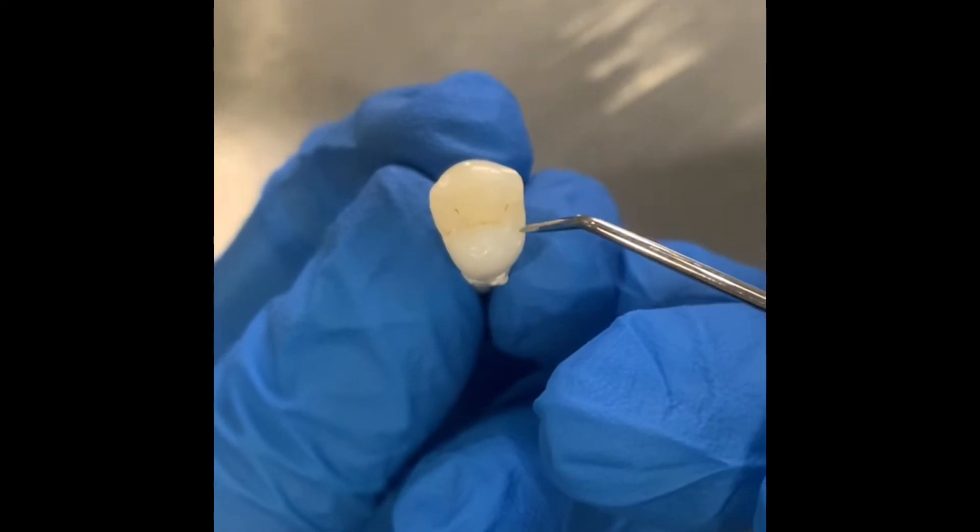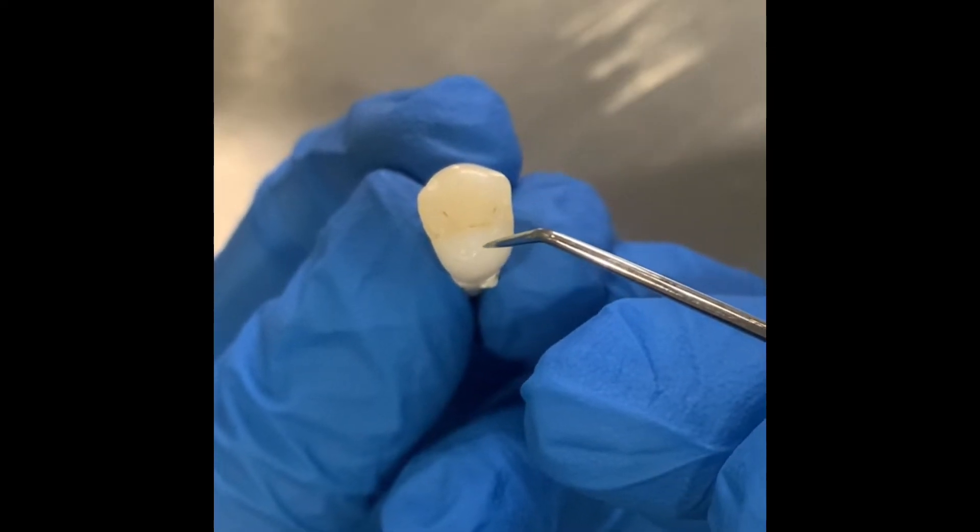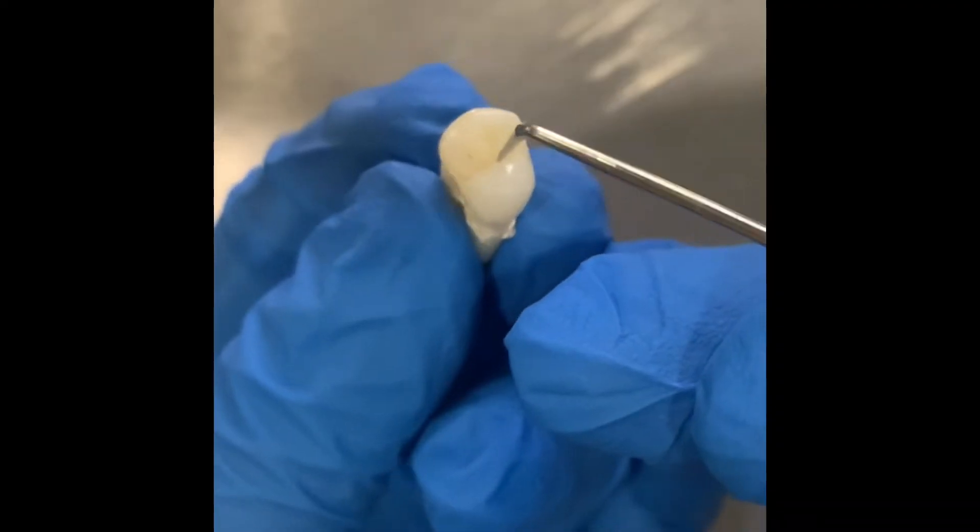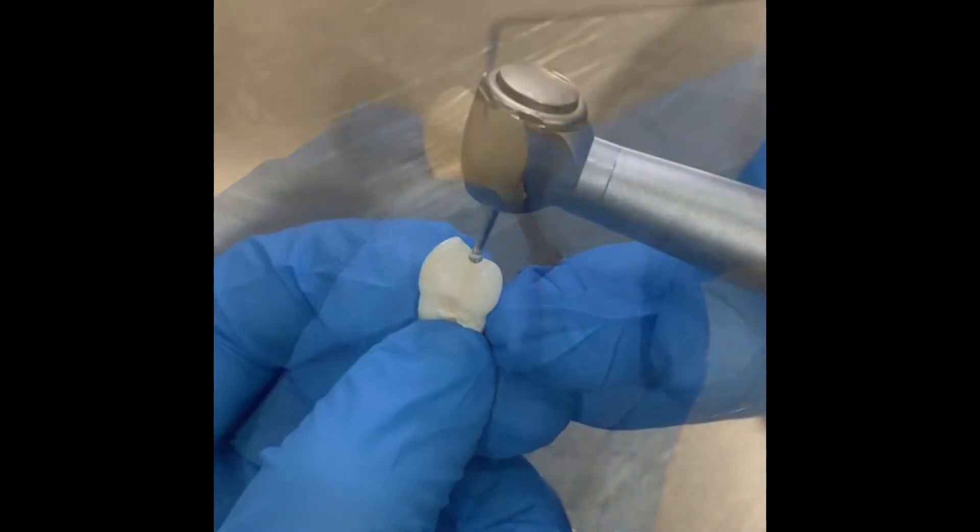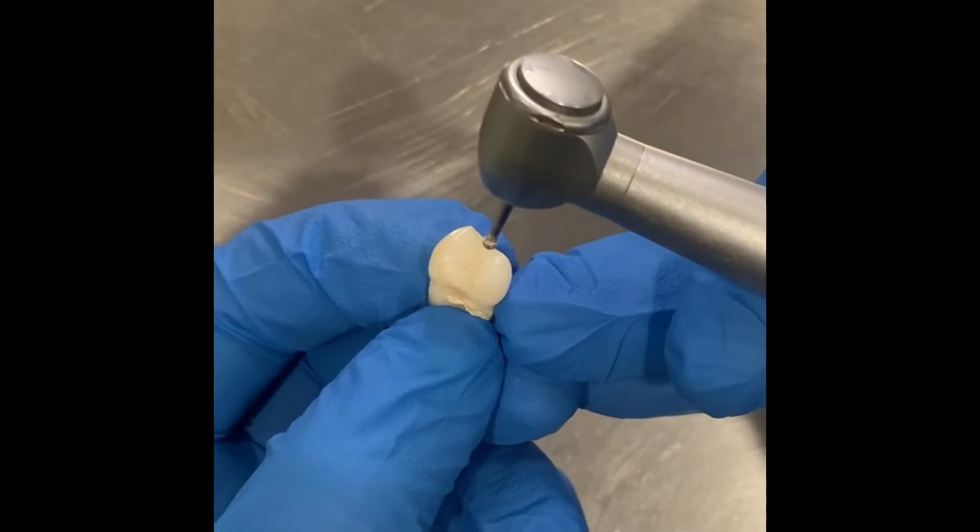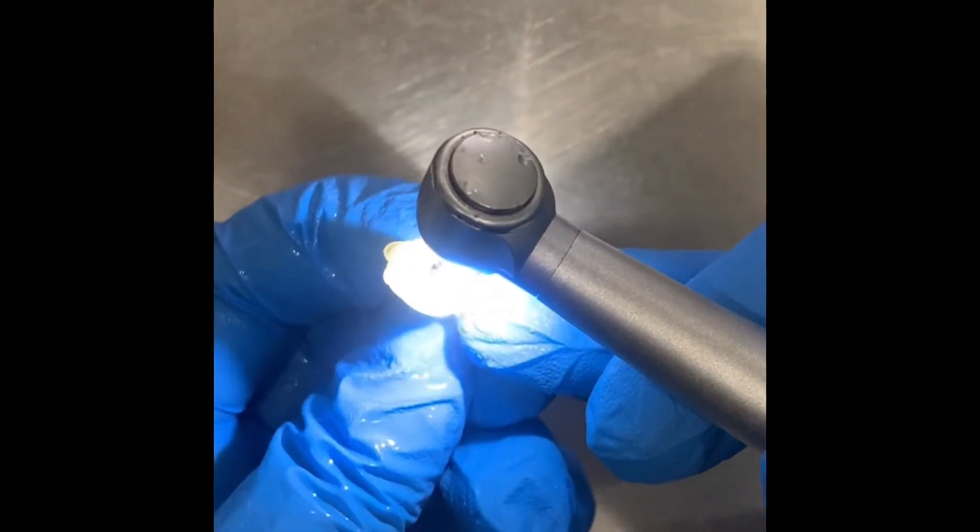This is a maxillary first premolar with a central groove and two cusps, buccal and lingual. We begin the access cavity from the center of the central groove and hold the bur perpendicular to the occlusal surface and start our cutting.